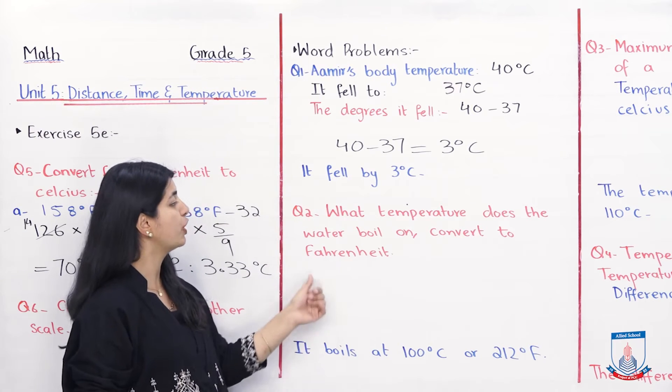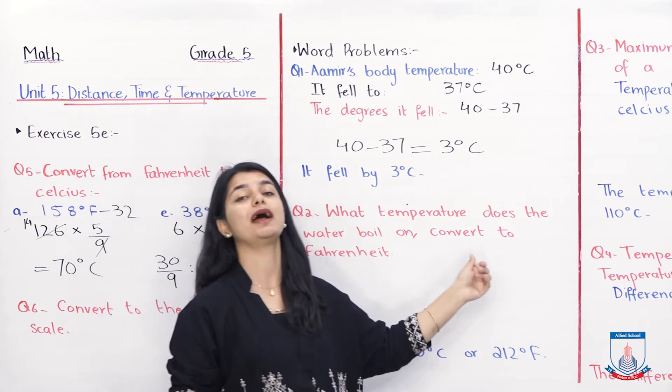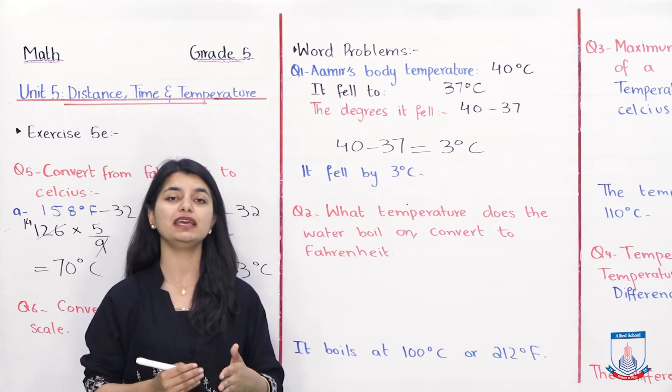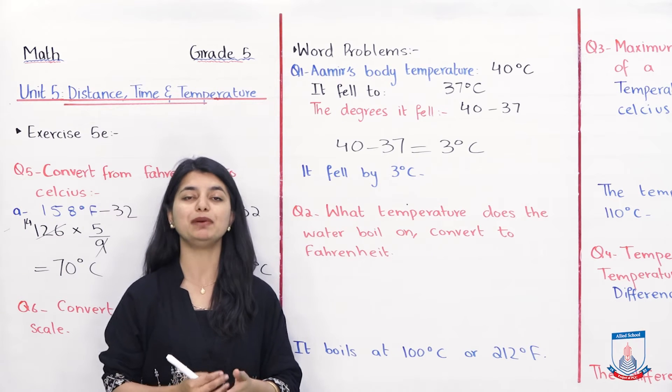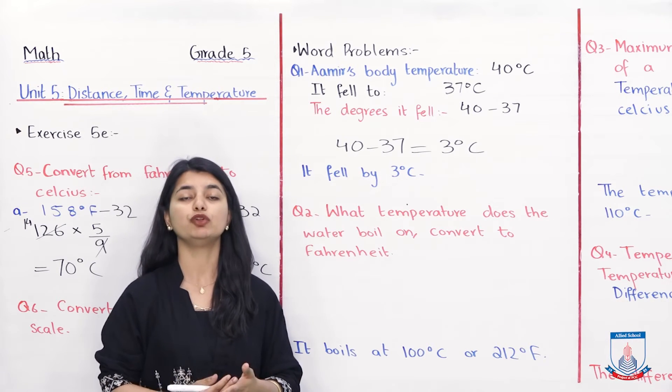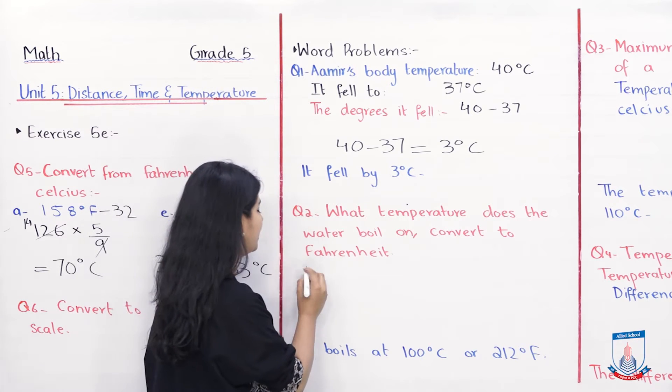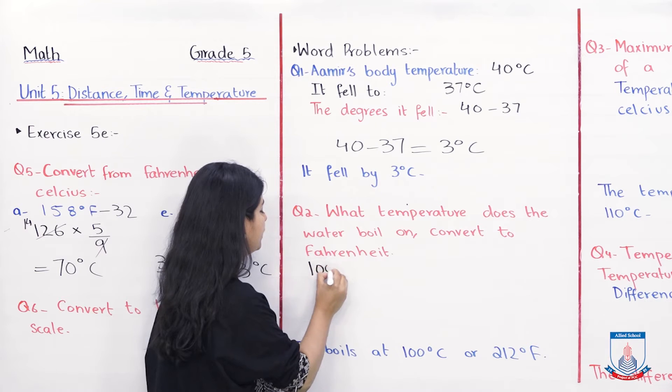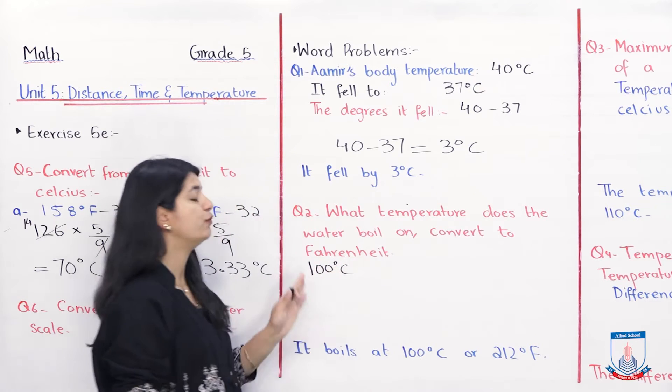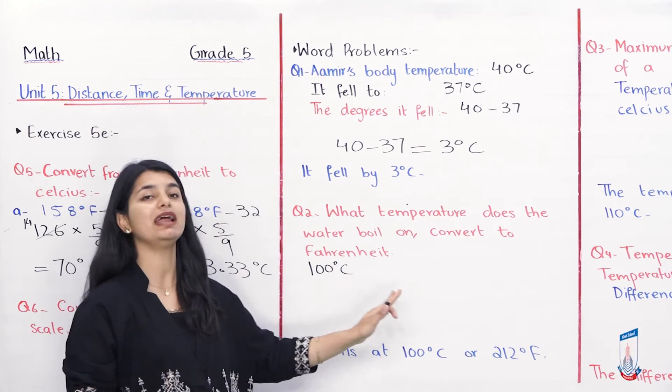Question number two is, what temperature does the water boil? Convert to Fahrenheit. Sarah's mother boiled the water. You have to tell her how many degrees it will boil. So you know that the boiling point of the water is 100 degree Celsius. She says that you convert it to Fahrenheit.